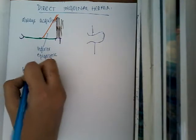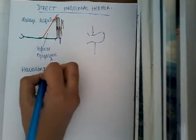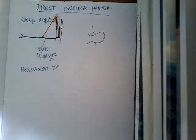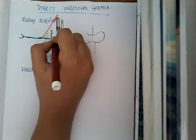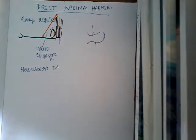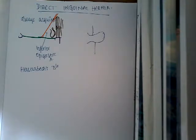This is Hesselbach's triangle. The content of this triangle is nothing but the direct inguinal hernia — it comes out through this triangle. Now, what are the coverings of direct inguinal hernia?